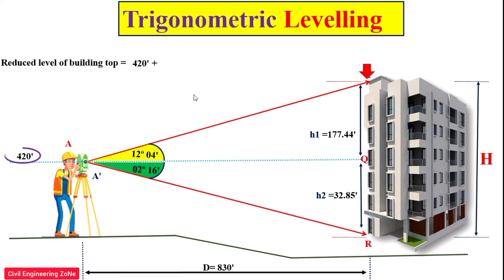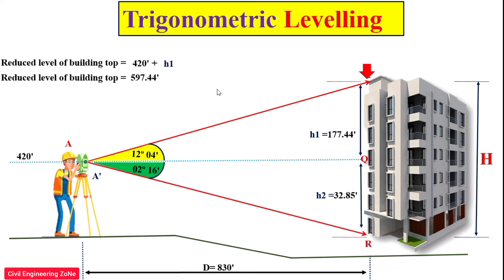For the reduced level, we take the elevation of the instrument axis of 420 feet and add h1. This gives us the reduced level of the top of the building. This is our today's topic. I hope you learned something new from this lecture. If you have any questions related to this topic, please comment on my channel and I will try to reply. See you in the next video, thanks for watching.